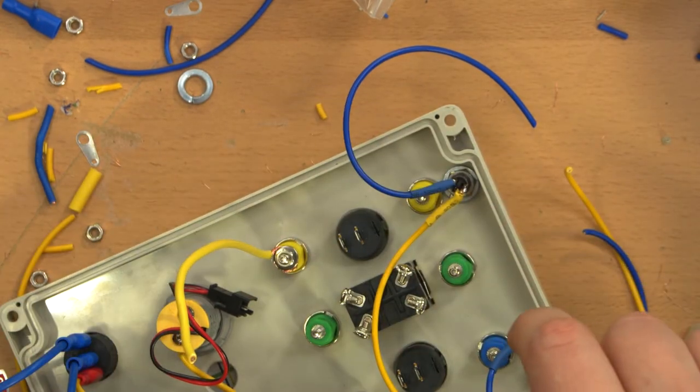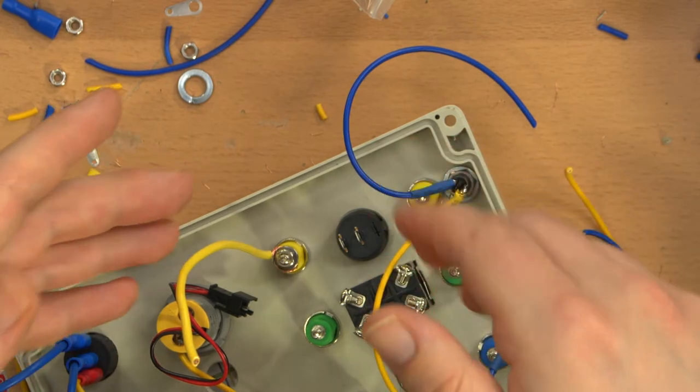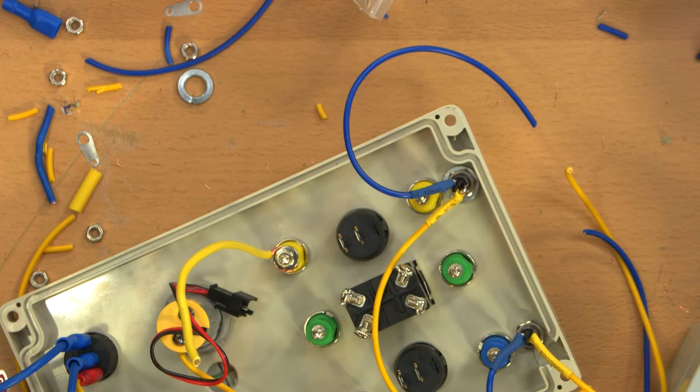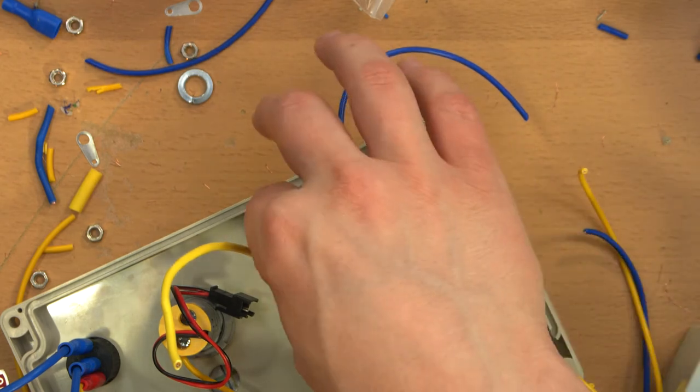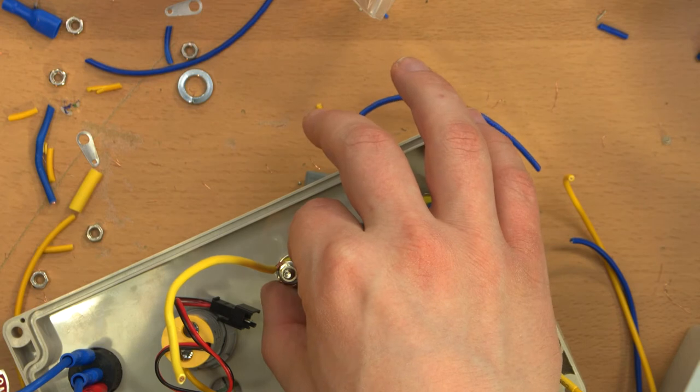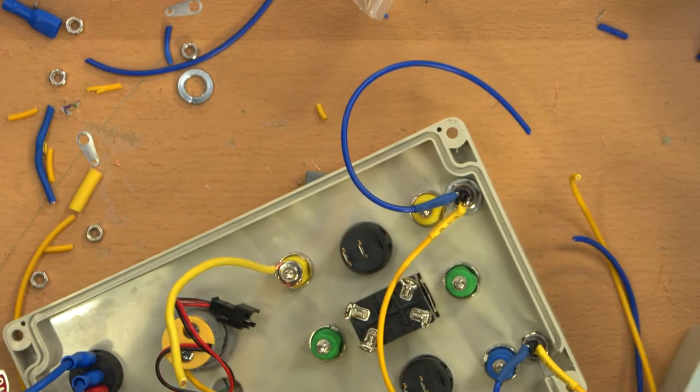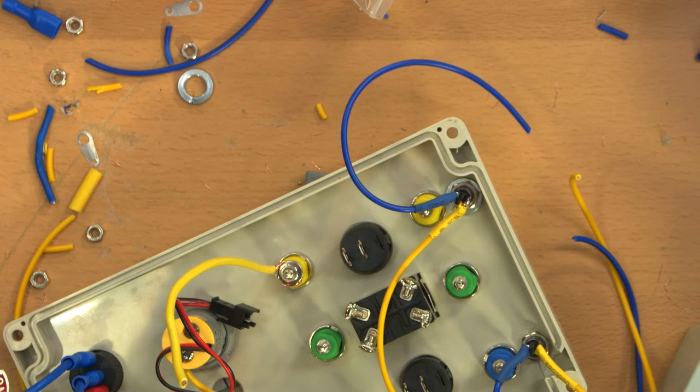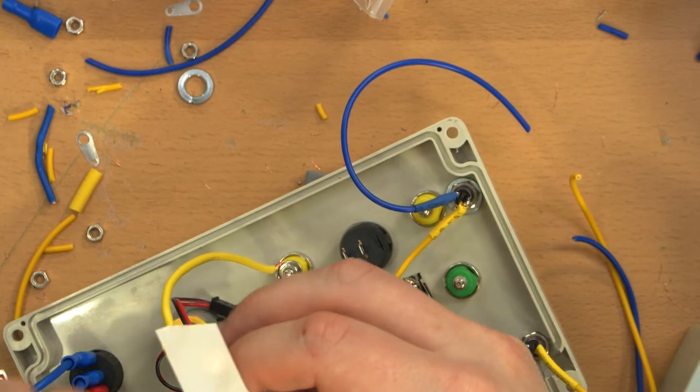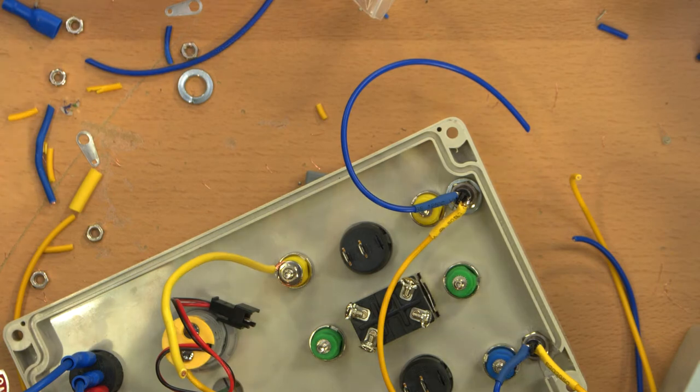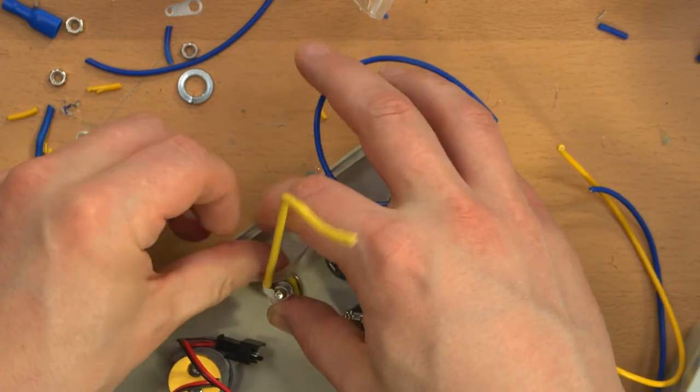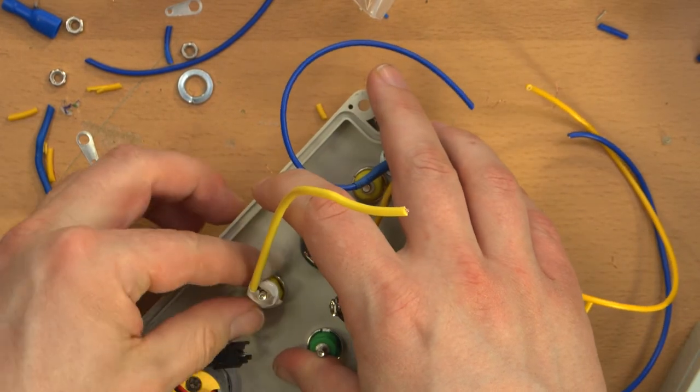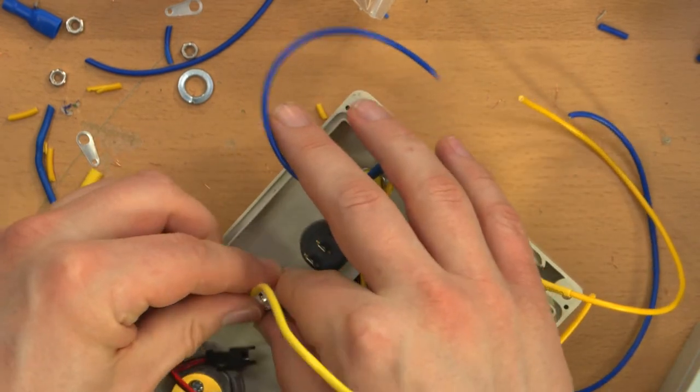Should I put like a little heat shrink around that? You know what, just to be thorough. But then if I want to reconfigure this box, that's going to be a bitch to get off. That's one of my goals here, doing as little soldering as possible. Maybe just some electrical tape. This is much easier to remove if I want to.